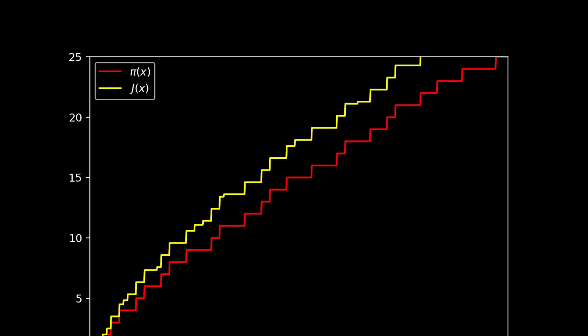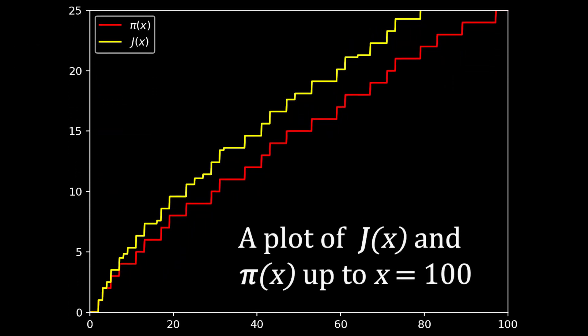So for example, at a prime number, the function increases by 1. At 25, the function increases by 1 over 2, because 25 is equal to a prime squared. At 8, the function increases by a value of 1 over 3, because 8 is equal to a prime to the power of 3. And you get the idea.